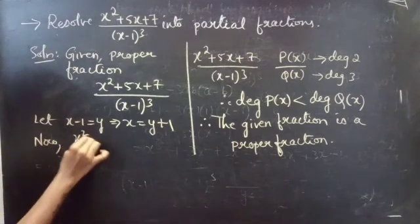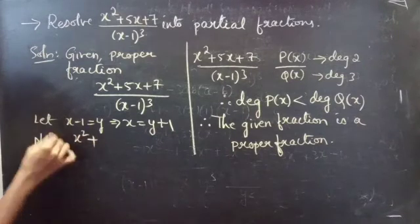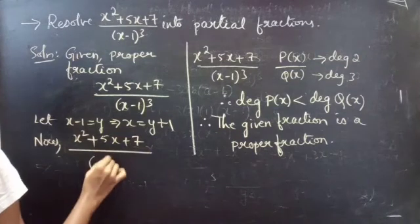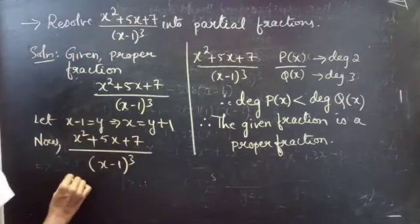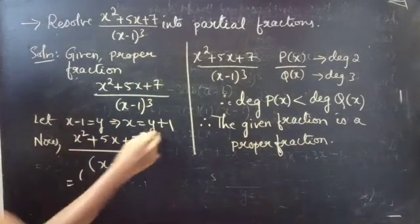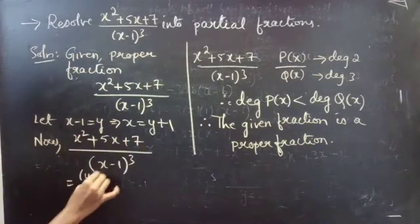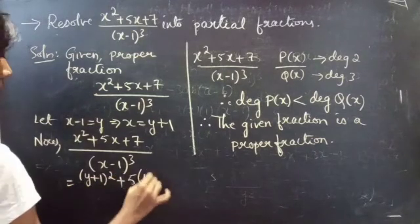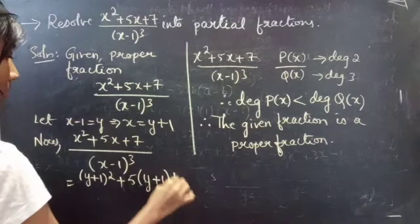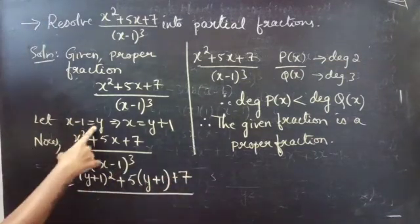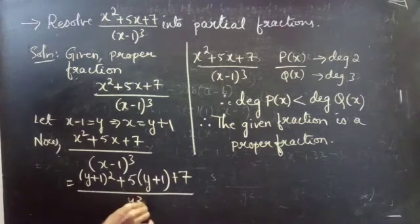Now (x² + 5x + 7) / (x − 1)³ can be rewritten by replacing x with y + 1: we get (y + 1)² + 5(y + 1) + 7, all divided by y³, since x − 1 is replaced by y.